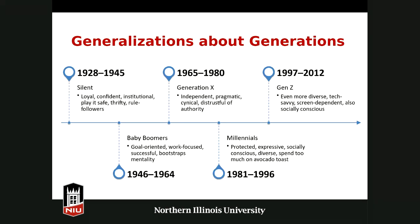On the next slide we'll see a timeline of generations and a sampling of common generalizations about each. For the purposes of this workshop, I've used Pew Research for generation birth years — they vary depending on the source. Starting with the Silent Generation, 1928 to 1945: some generalizations about them include loyal, competent, institutional, play it safe, thrifty, and rule followers.